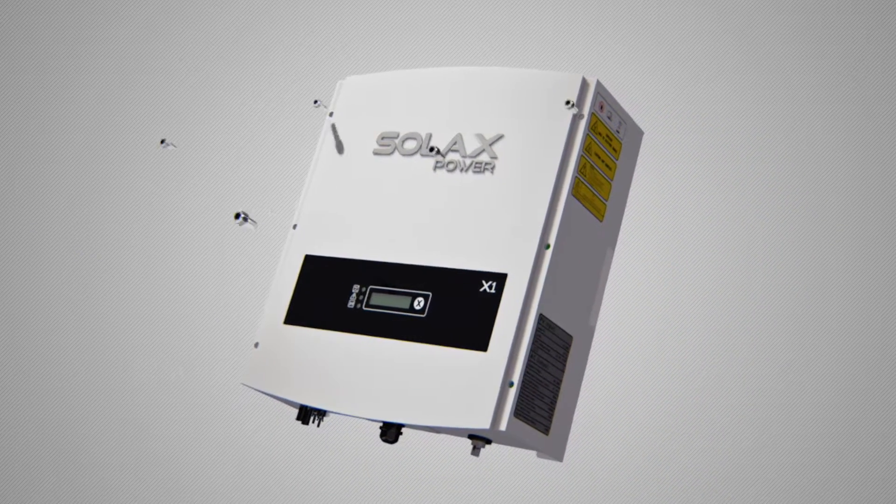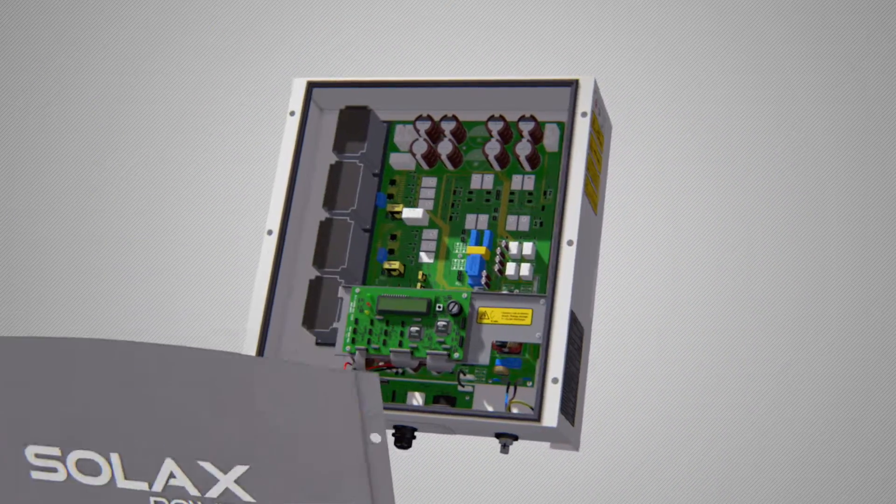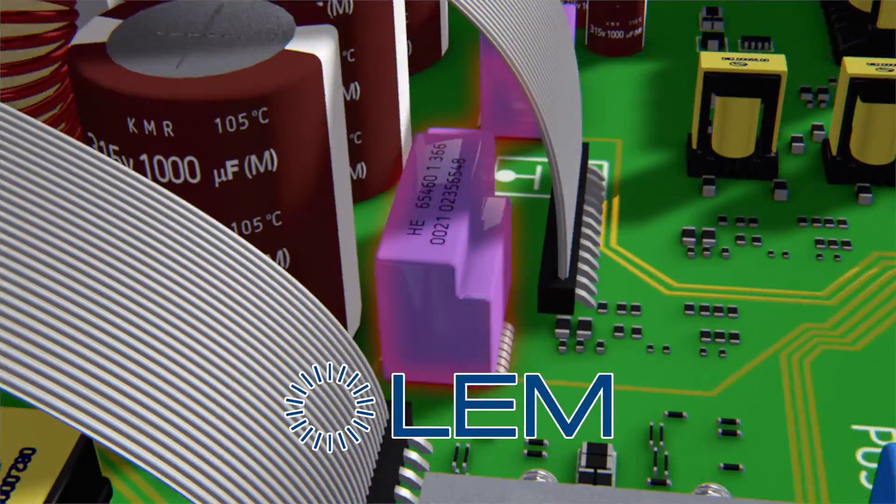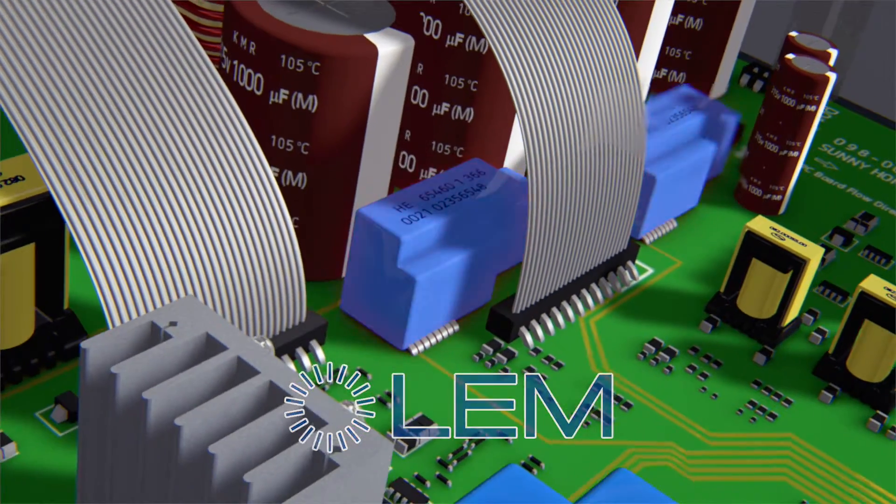We select only the most reliable components with a focus on high efficiency and longevity. For example, an LEM current sensor is used to collect high precision data. Its high sensitivity, low temperature drift and superior anti-jamming ability make it the best choice available.